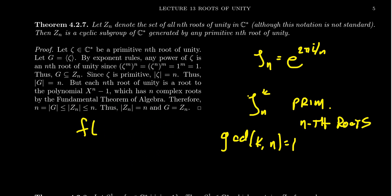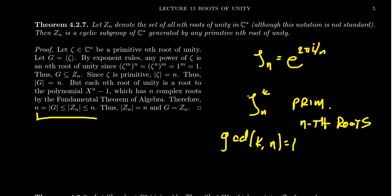G contains n elements and is a subset of Zn. In terms of cardinality, the cardinality of g is less than or equal to the cardinality of Zn. By the fundamental theorem of algebra, Zn itself has cardinality at most n. Since n equals n, equality is forced in both situations. So g equals Zn, and as g was a cyclic group, that tells us that Zn is a cyclic subgroup of C star.